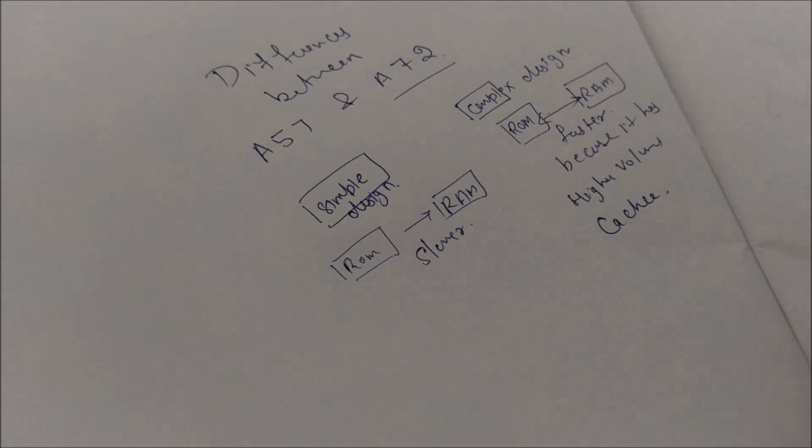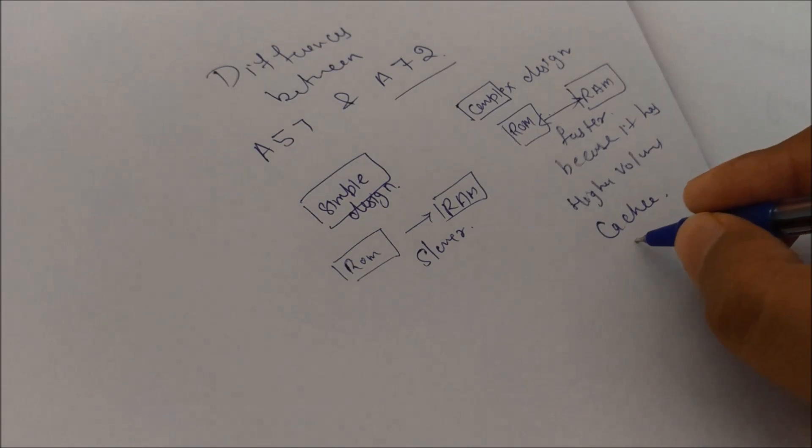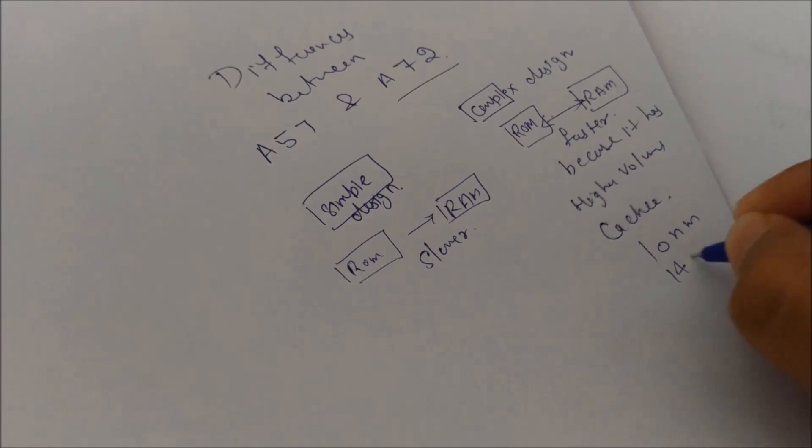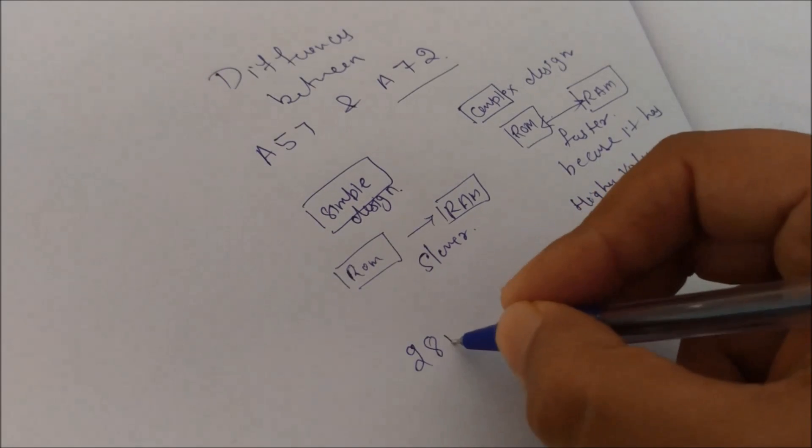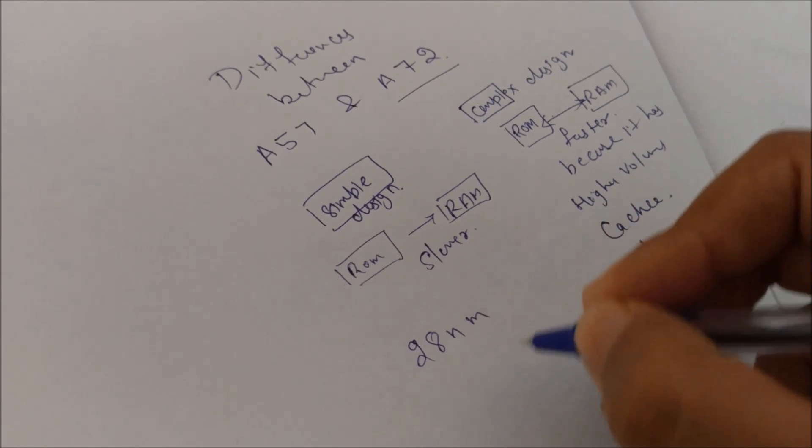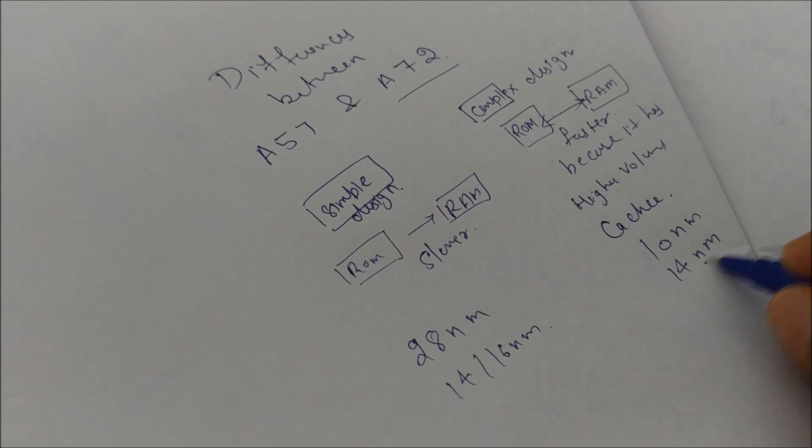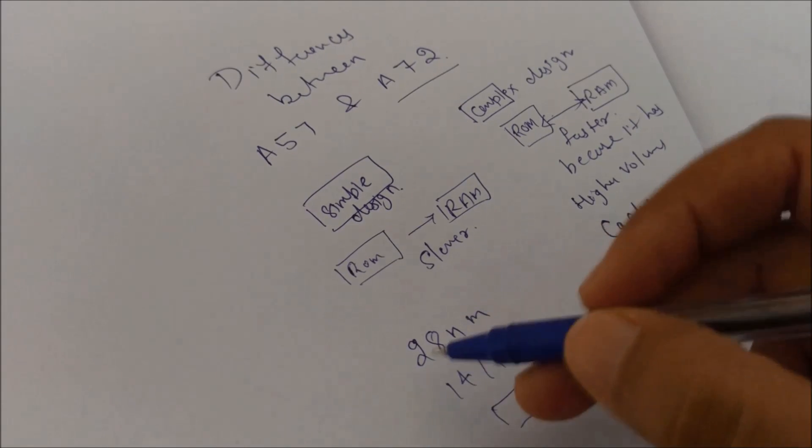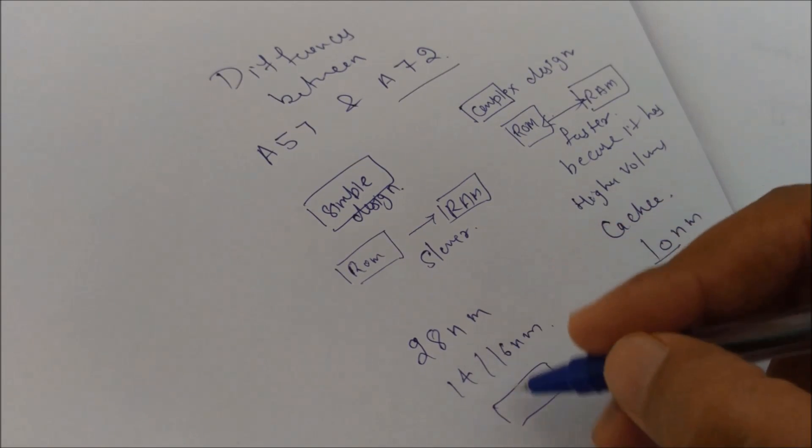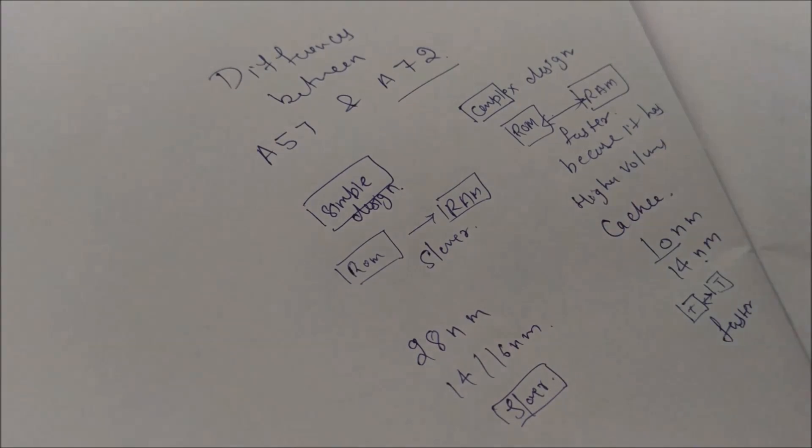So again there is one more difference: on which technology this architecture has been built. One is called like 10 nanometer, 14 nanometer and here we can have 18, 28 nanometer or 14, 16 nanometer. So nanometer means the distance between different transistors. If it is 10 nanometer the distance would be less and the data transfer will be faster, and it will be slower in case we have 28 nanometer or 16 nanometer technologies.